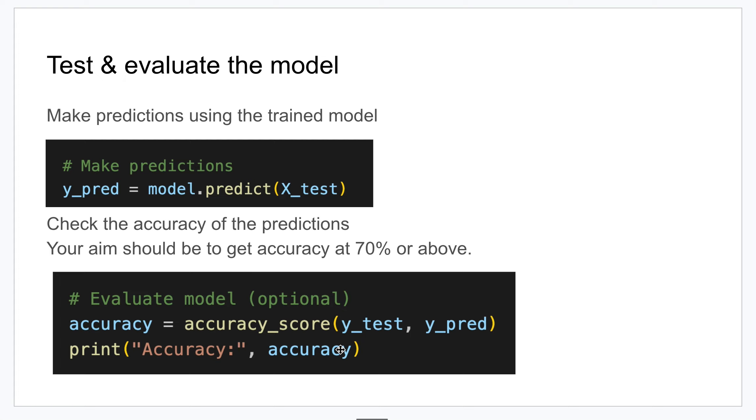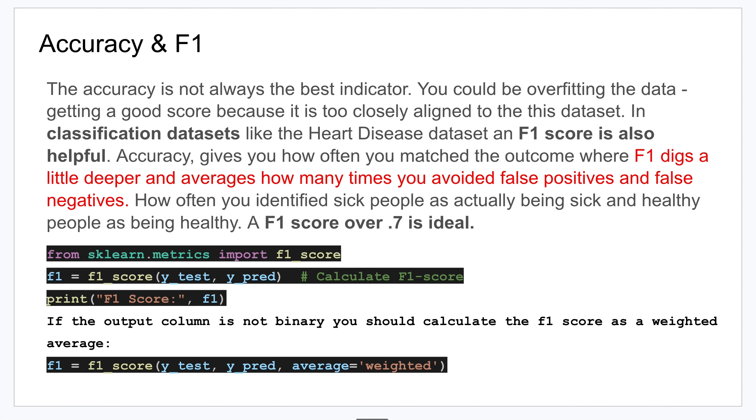Typically when we print this out we're going to look to see if there's a score of 70% or above - that's typically thought to be a good model, otherwise you would go back and tweak things. The accuracy is not always the best indicator though, so getting a good score could be because the data is too closely aligned to your model.